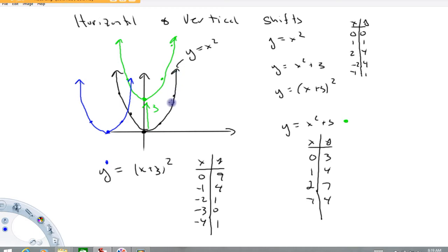So remember the black one here was the original function y equals x squared. The important things to recognize are this. This plus 3 here took this black graph, lifted it up 3 units. This plus 3 right here, putting it inside the parentheses, took that black graph and moved it left 3 units. So these are examples of what are called horizontal and vertical shifts.